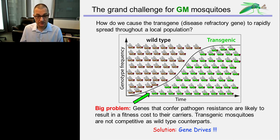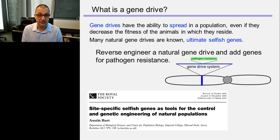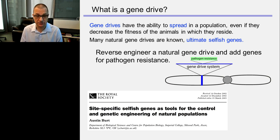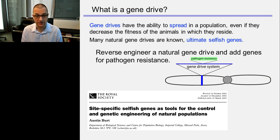So what is the solution? The solution is a gene drive. Gene drives have the ability to spread in a population even if they decrease the fitness of the animals carrying them. Many natural gene drives are known — they are the ultimate selfish genes. The logical solution is to reverse-engineer a natural gene drive and add genes which induce pathogen resistance, make transgenic mosquitoes, and spread them through the population. This idea was suggested in 2003 by Austin Burt, and at that point it seemed unattainable.